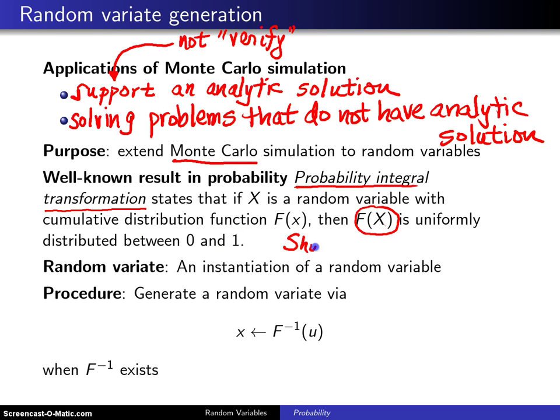Some shorthand for this that we're going to use a little bit later, but I'll introduce it now, is F(X) is distributed as, that's this squiggle here, a uniform(0,1) random variable. Now there's no proof of that here, but nevertheless that's an important result and it allows us to generate random variates.